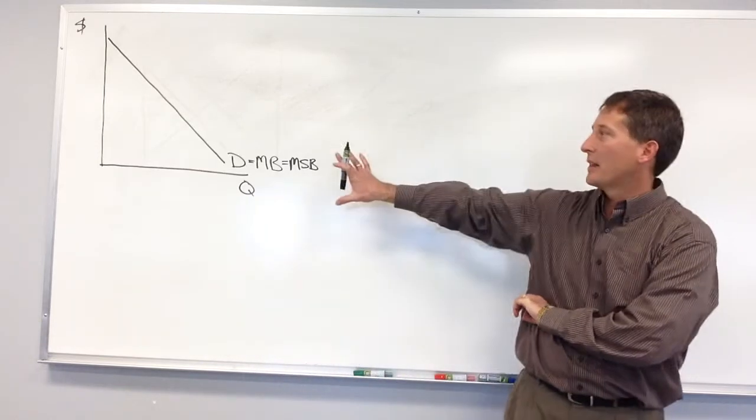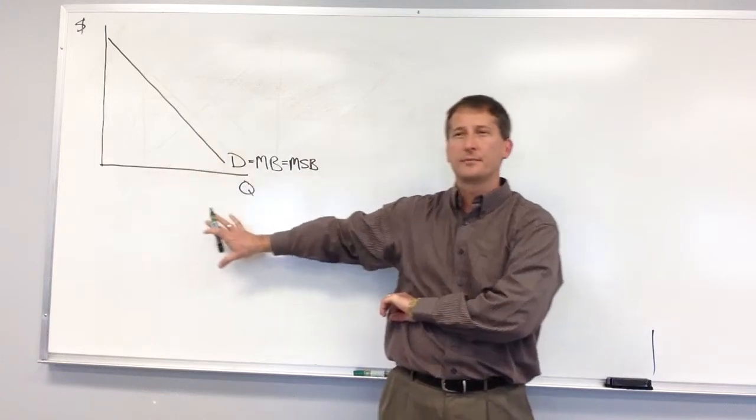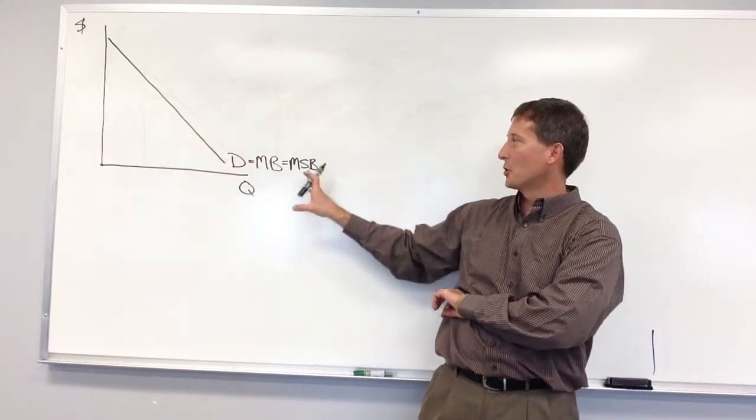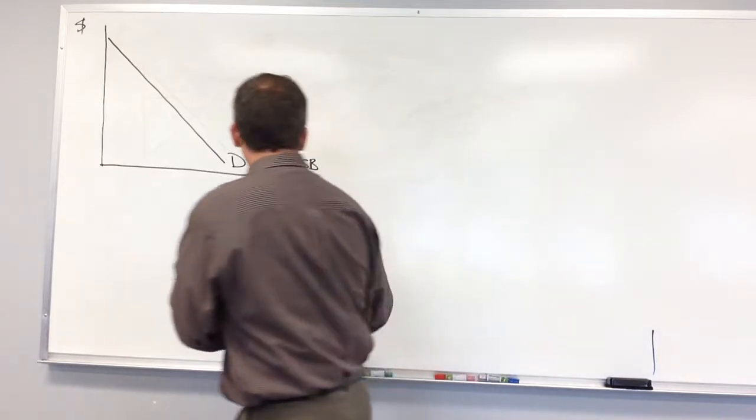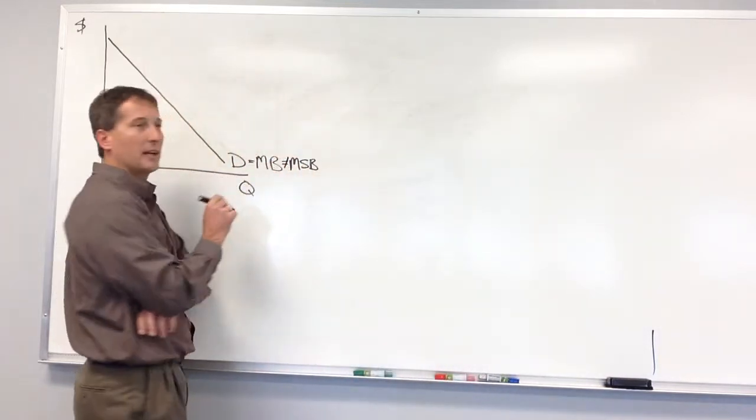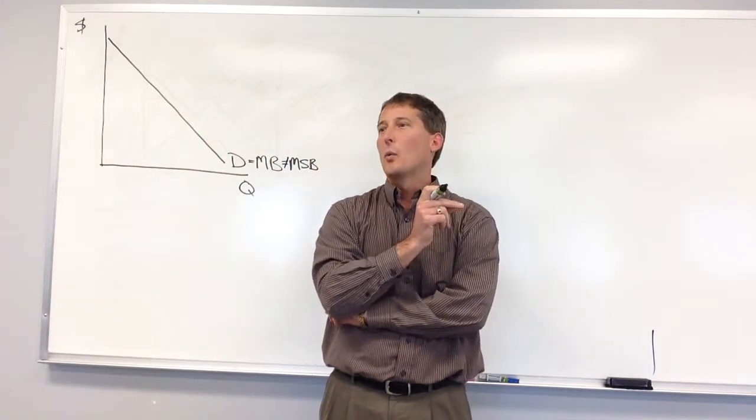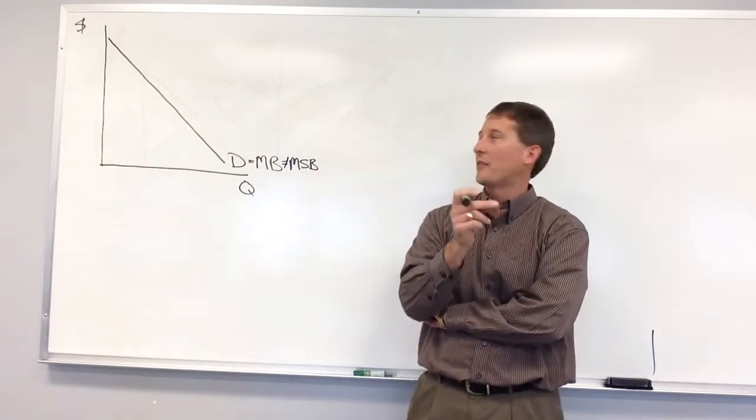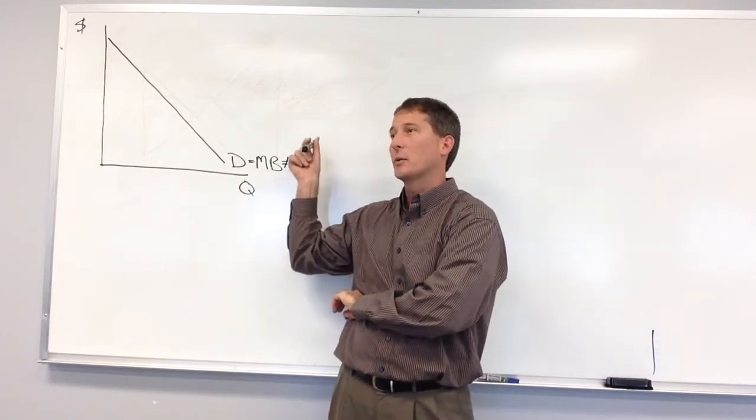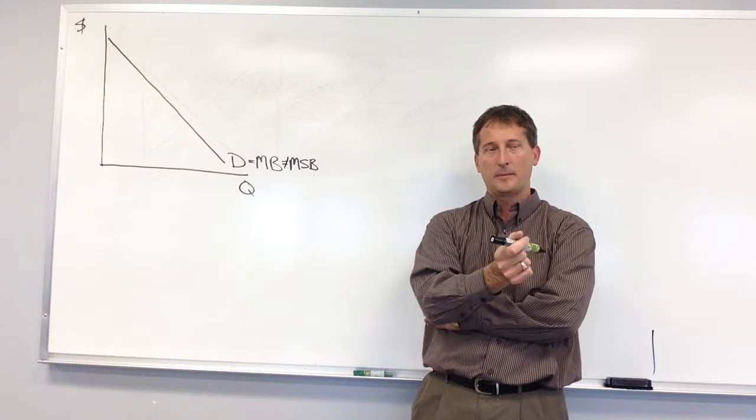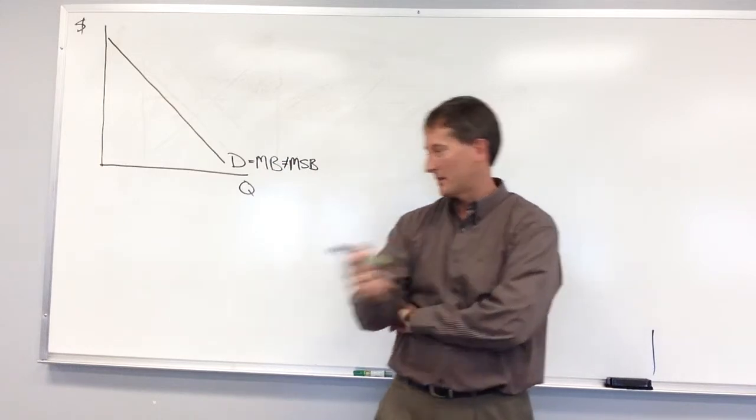How do we model that with this? Where does the social benefit - so the social benefit is no longer equal to the private benefit. We're breaking this link. Where does the social benefit curve lie in relationship to the private benefit curve? It's above it. That's right.